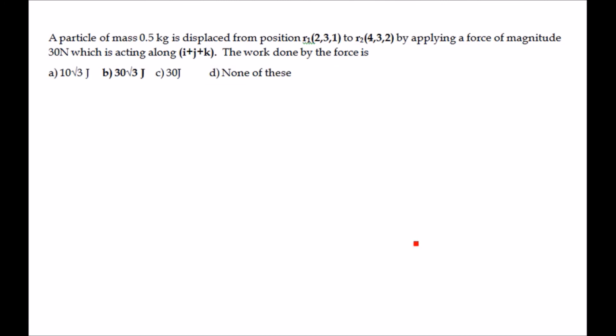The next problem: a particle of mass 0.5 kg is displaced from position r1 = (2,3,1) to r2 = (4,3,2) by applying a force of magnitude 30 newton acting along i + j + k. Find the work done by this force. Force and two position vectors r1 and r2 are given.